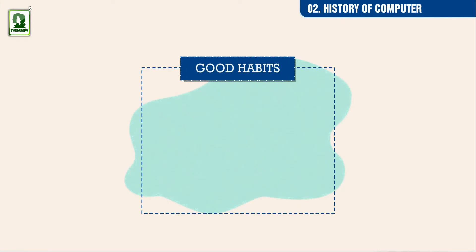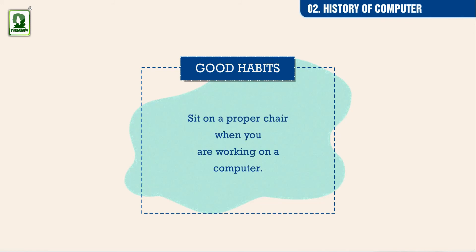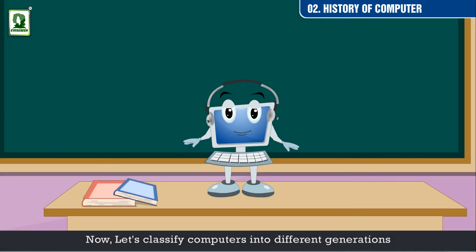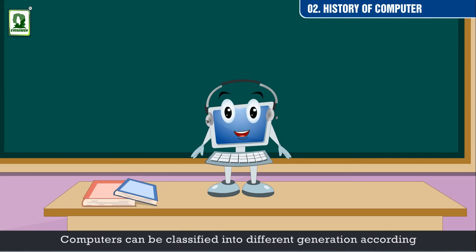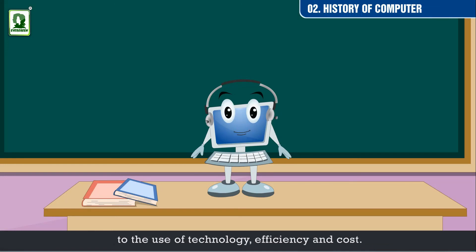Good habits: sit on a proper chair when you are working on a computer. Now, let's classify computers into different generations. Computers can be classified into different generations according to the use of technology, efficiency, and cost.